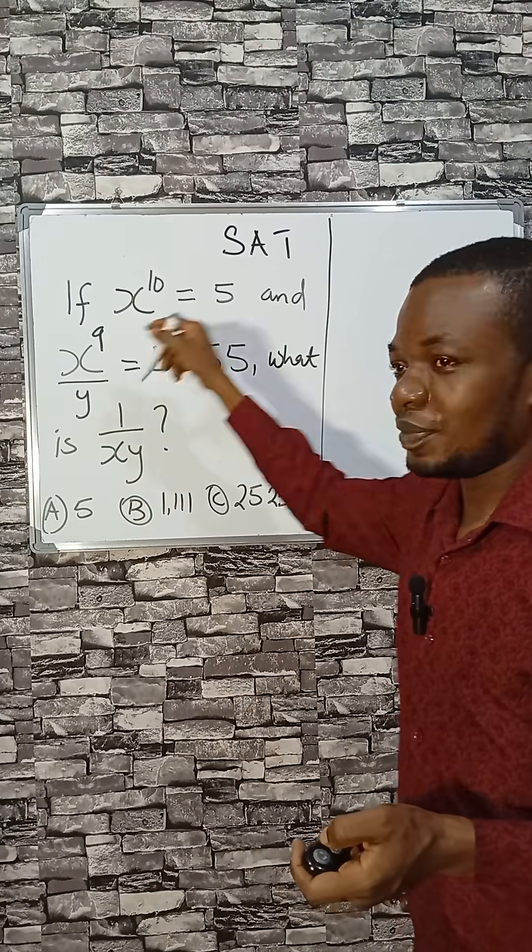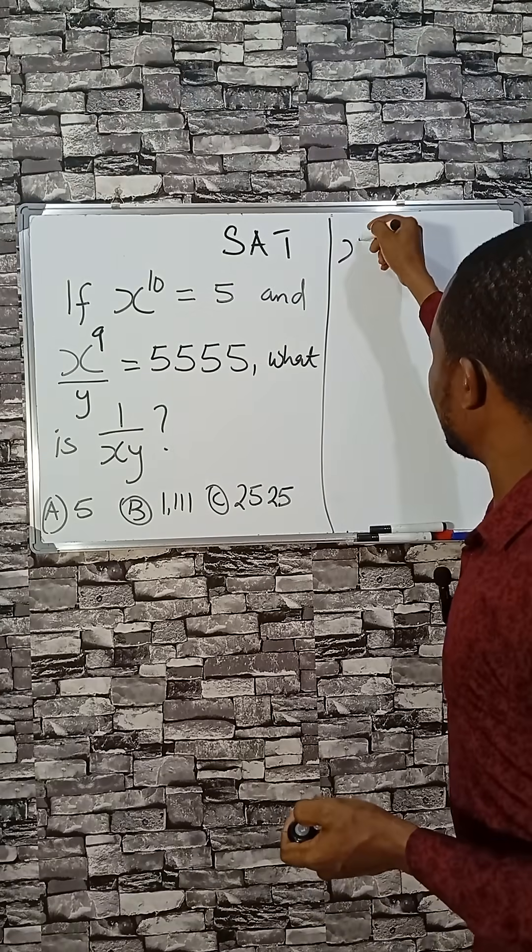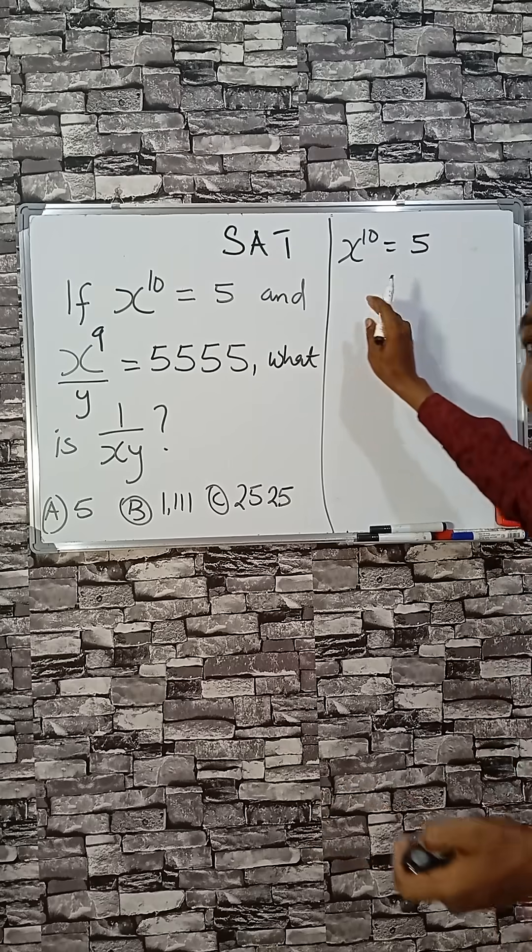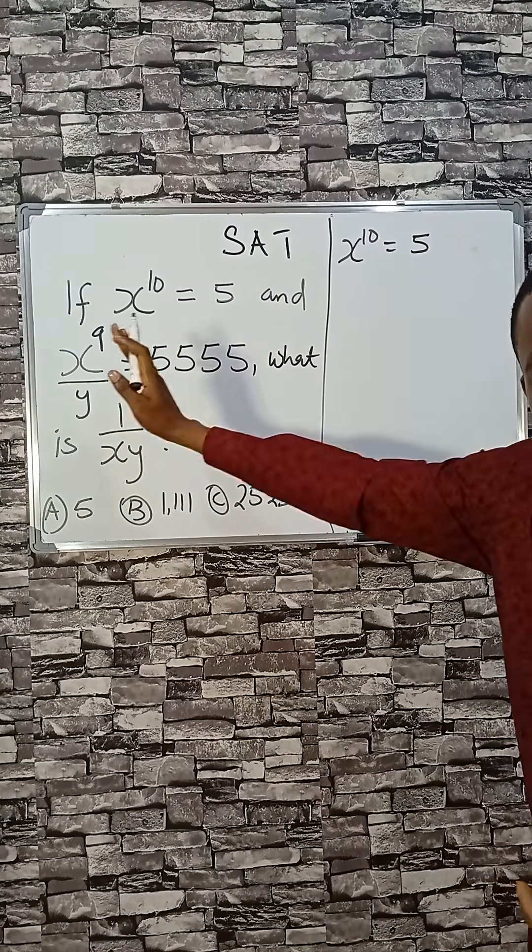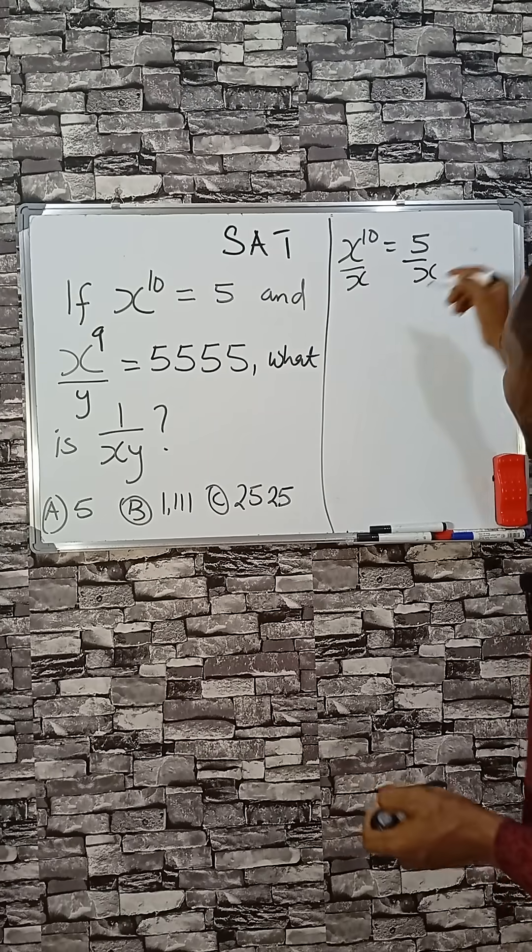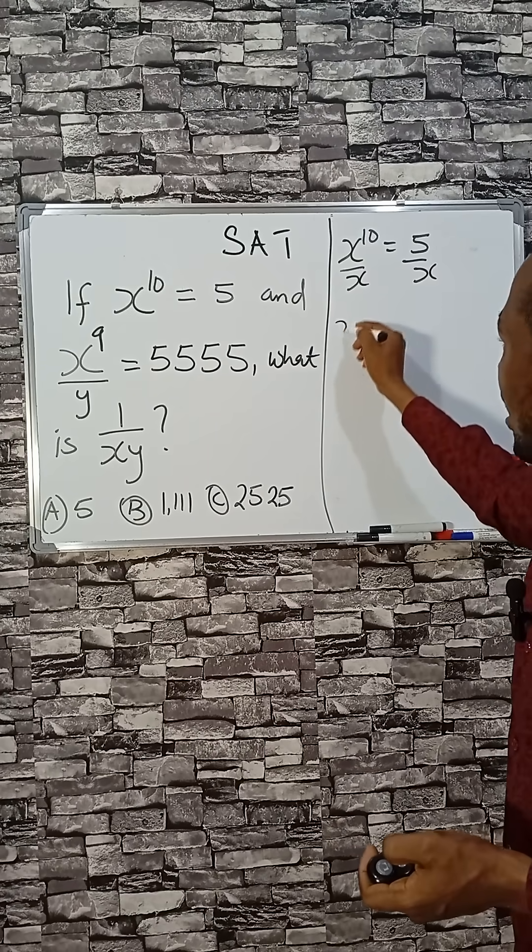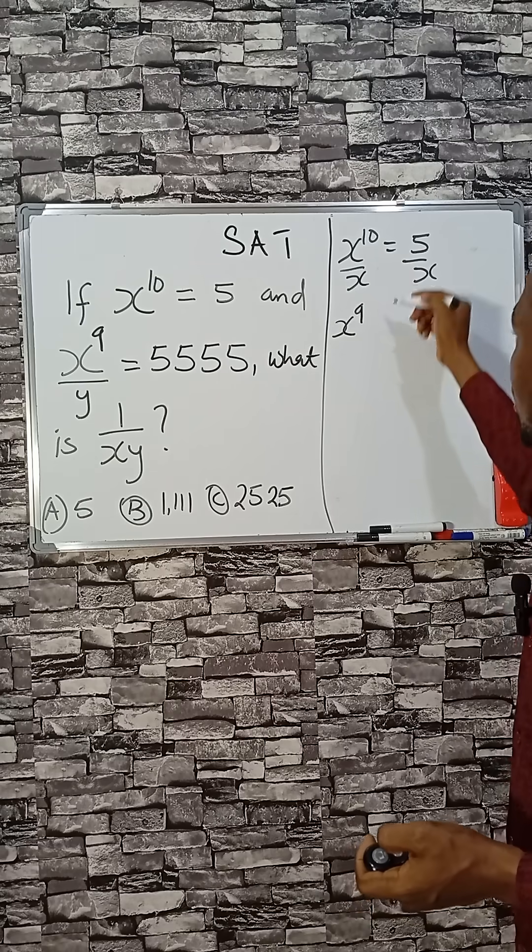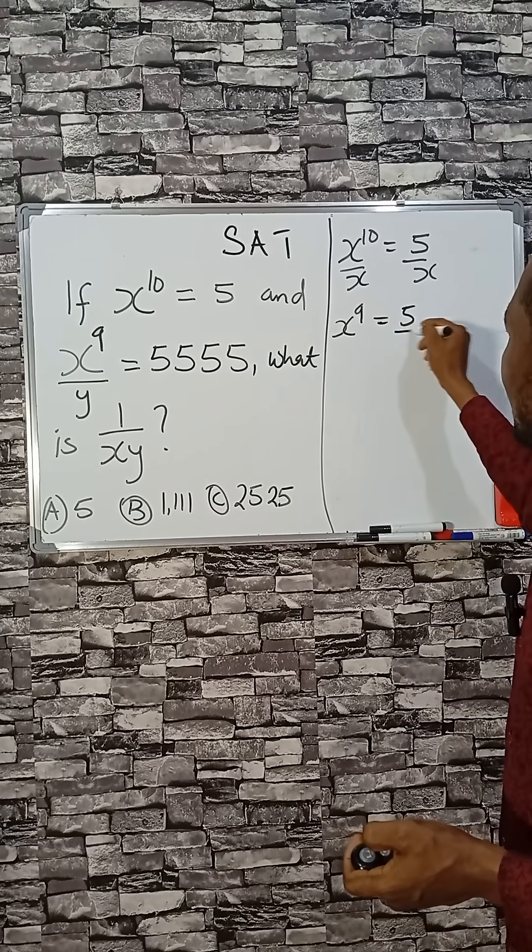Let's work with this first. Now x raised to the power of 10 equals 5. But if I divide the left hand side and right hand side by x, if that happens, we have x to the 9 because one comes up here, and this will be 5 divided by x.